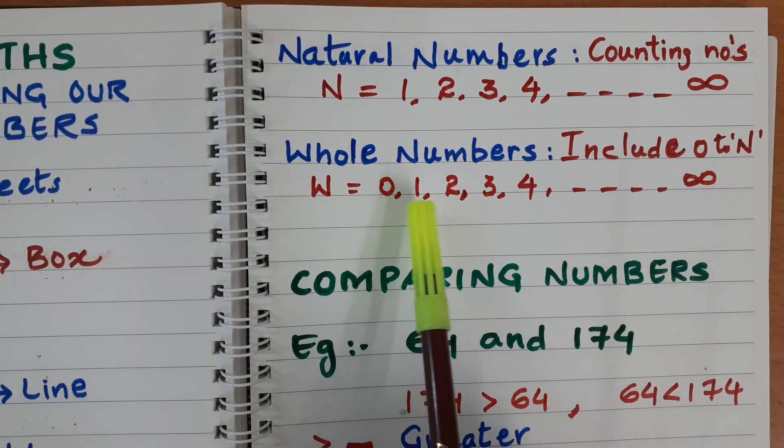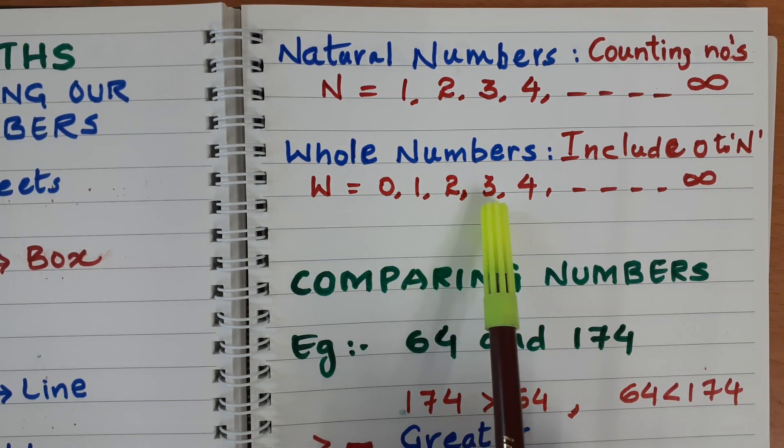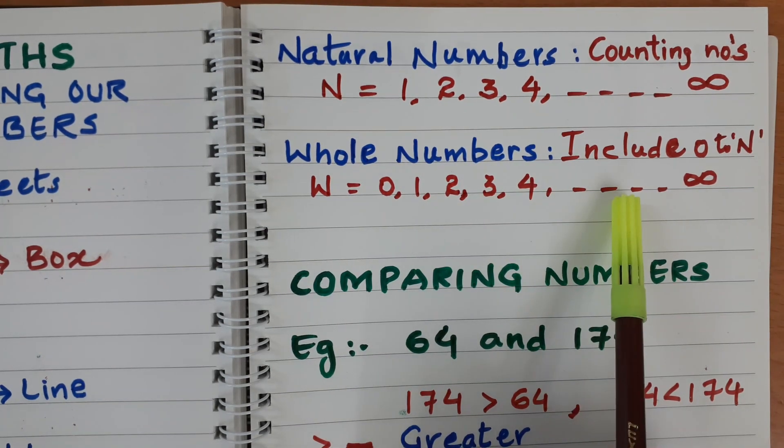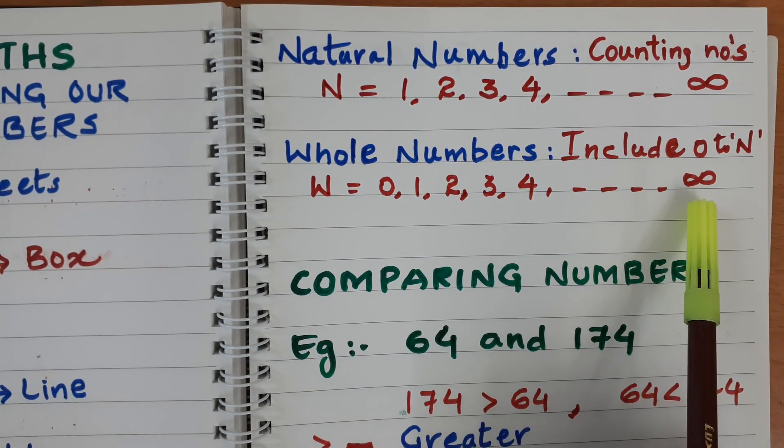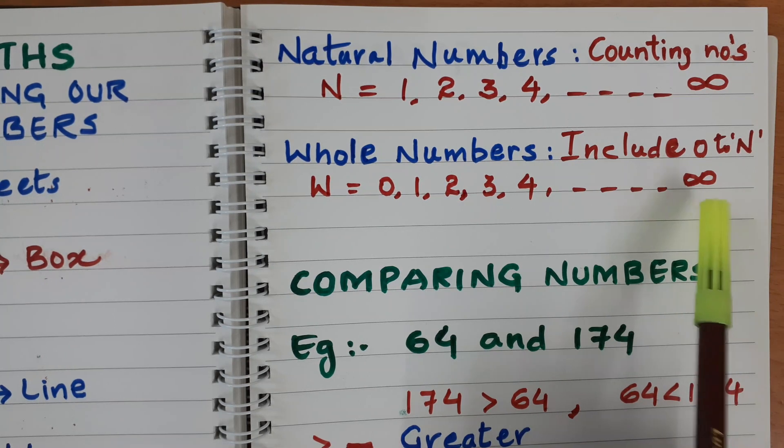W equal to 0, 1, 2, 3, 4, 5, 6 like this so on up to infinity. Endless numbers. This is infinity symbol. Numbers are endless. Infinite.